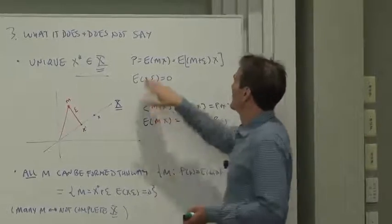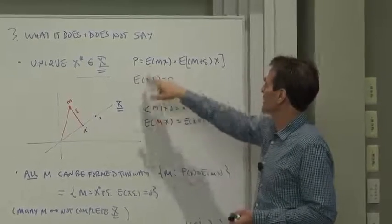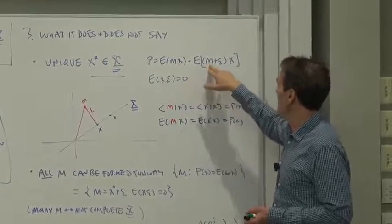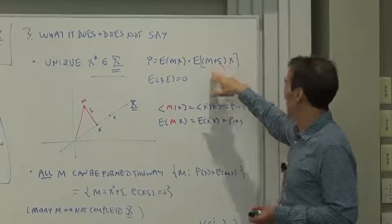For example, let's look at this algebraically. If price equals E of M X, then we can always say E of M plus Epsilon X adds some noise.